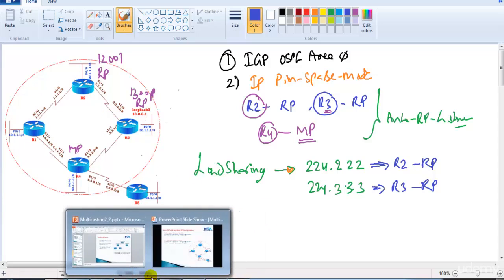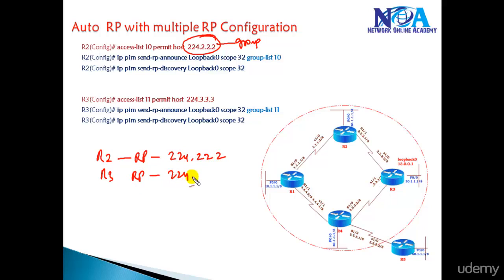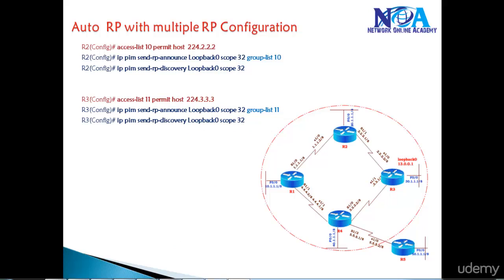To make this possible, we need to configure access lists defining the group addresses. For router 2 to be the RP for 224.2.2.2, we use 'ip pim send-rp-announce loopback 0 scope 10 group-list 10', where ACL 10 matches 224.2.2.2. Similarly, ACL 11 matches 224.3.3.3 and router 3 will be the RP for that separate group.